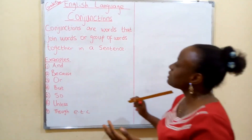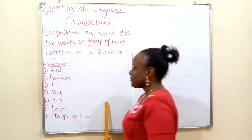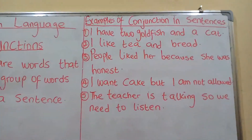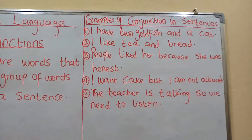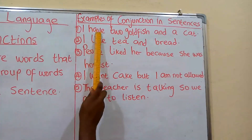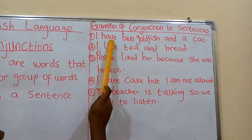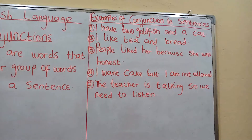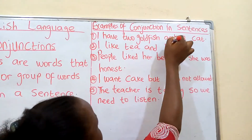Now we're going to look at these words in sentences. I'm going to write them on the board and we're going to go through them together. On the board we have examples of conjunctions in sentences. Number one: I have two goldfish and a cat. The conjunction here is 'and'.